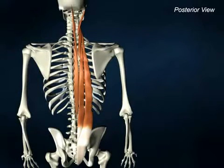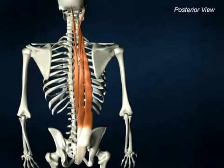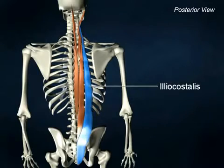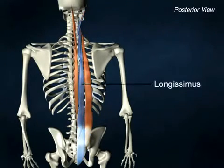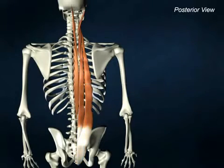The erector spinae, the prime movers of back extension, consist of three superficial columns of muscle in the posterior neck and trunk. These are the iliocostalis, the longissimus, and the spinalis.